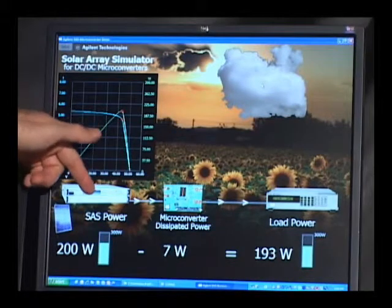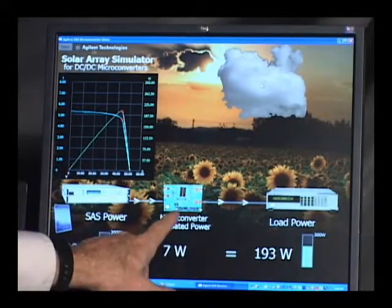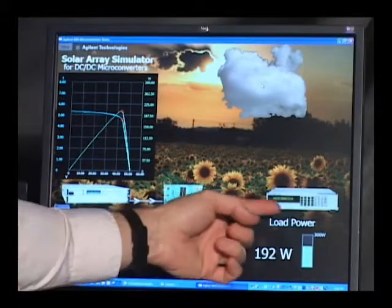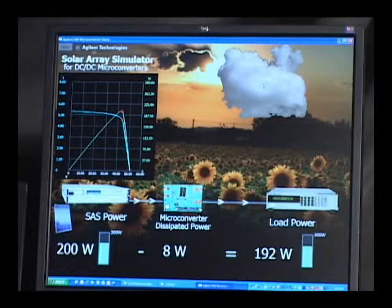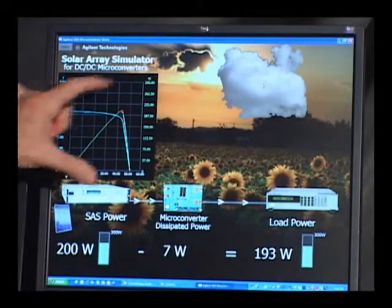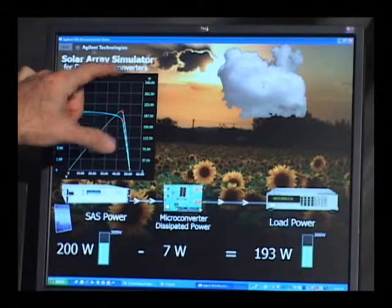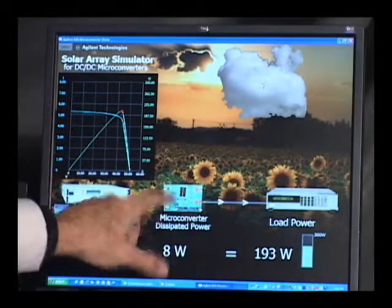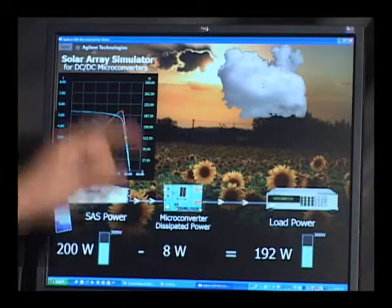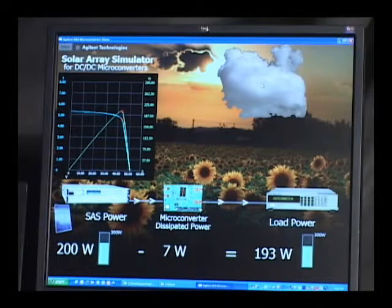So again we've got the SAS providing the DC input power to the converter. The output of the converter is going to an Agilent electronic load, just pulling a constant amount of current from the converter. And as the cloud blocks the sun we have less light available, less power available, but this still harvests as much power as possible from the IV curve.